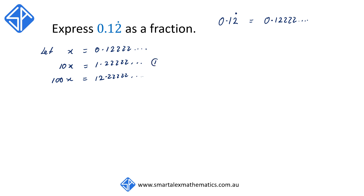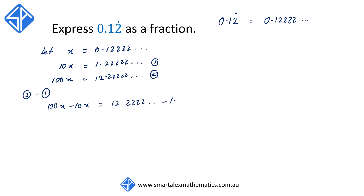We're going to call this equation 1 and equation 2. And we're going to say equation 2 take away equation 1, so that we have 100x minus 10x is equal to 12.2222... minus 1.2222...